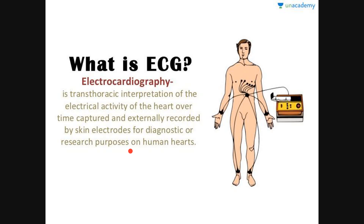Now we will see the positions of electrodes used for recording in ECG. The positions are on the right arm, left arm, and on the left leg. You can see that there is also an electrode on the right leg, but this denotes a grounded electrode and is not a recording electrode. So as mentioned in NCERT, the positions of leads are right arm, left arm, and the left leg. There is a triangle formation here, and this triangle is known as Einthoven's triangle. Einthoven was the scientist who discovered and invented this technique of ECG.